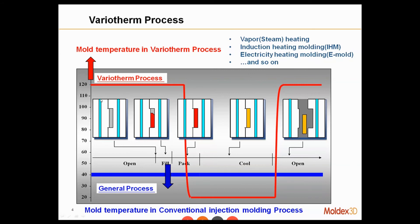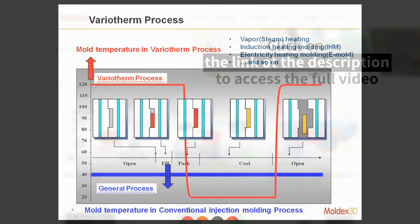However, for the variotherm process, the temperature is high in the beginning — when the mold is still open and waiting until it is closed, then we start with the filling stage. During the filling stage, the mold temperature is always kept high, like 120 degrees Celsius in this case.